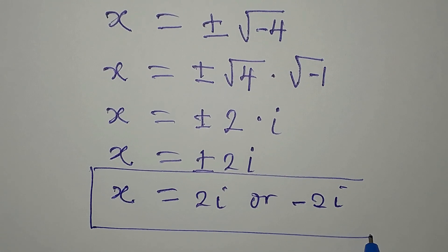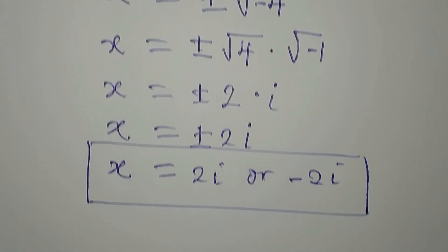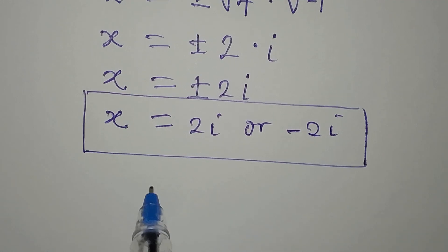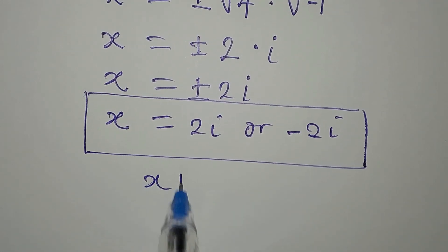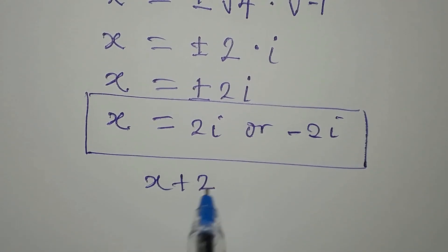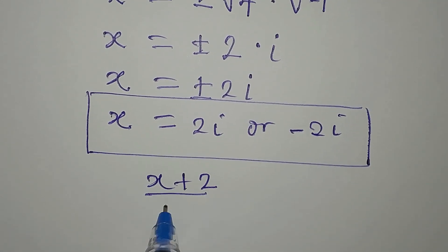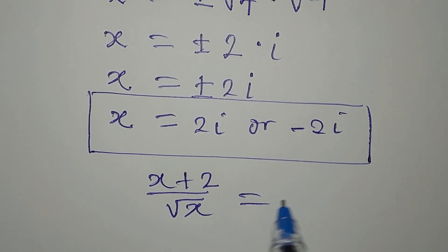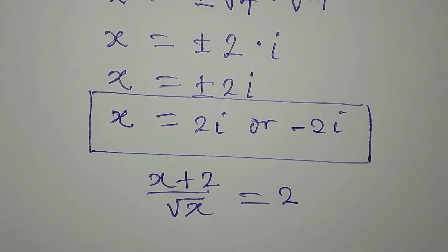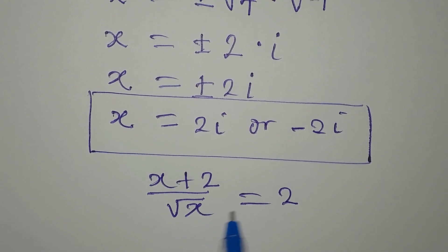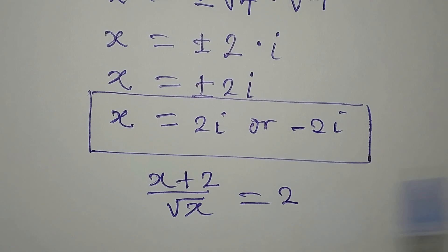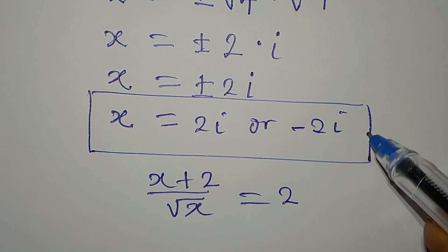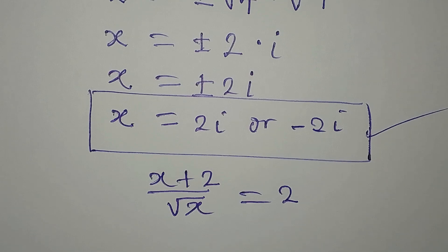So for the equation (x + 2) over square root of x equals 2, there is no real solution. The two solutions are complex numbers: x equals 2i and x equals negative 2i. These are the two complex solutions.